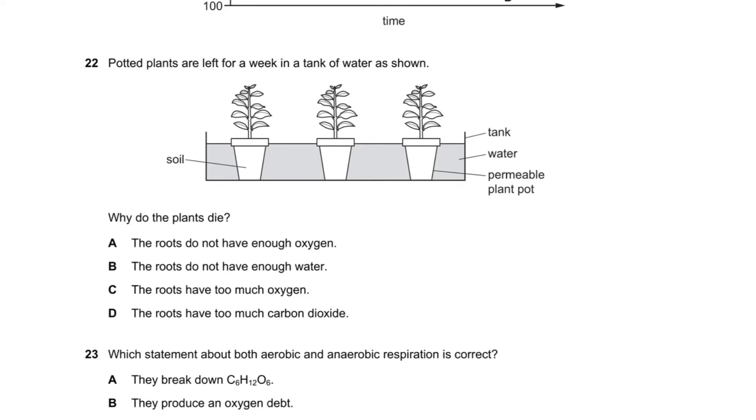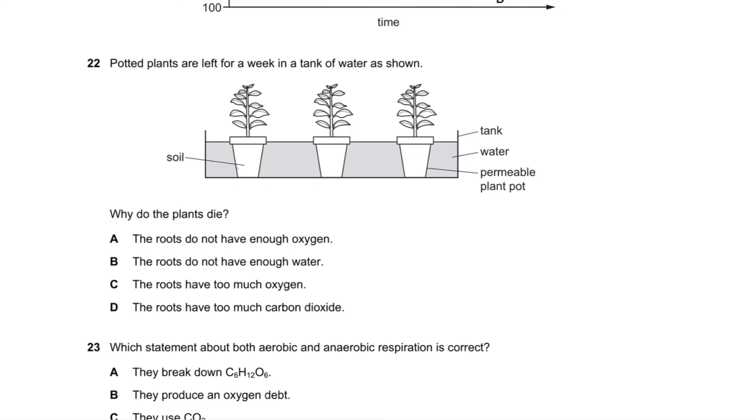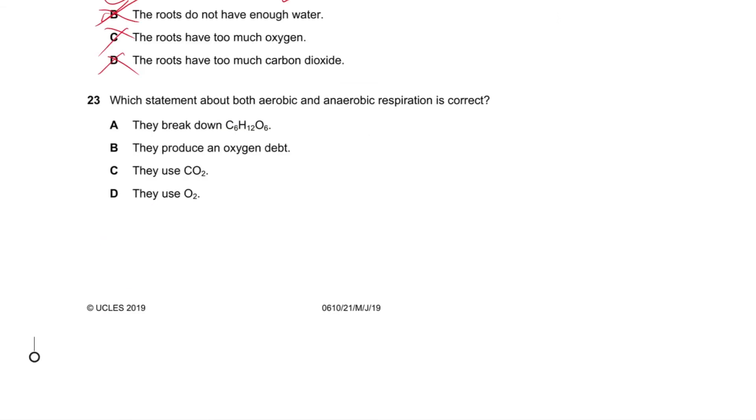Question number 22 says part of plants are left for a week in a tank of water as shown. Why do the plants die? The roots do not have enough oxygen. That's true because the water is surrounding the soil so there's no way for oxygen to really get in there. All of the plant cells need to respire, which requires oxygen. Do they not have enough water? It's permeable, so they do have enough water, so it's not B. They have too much oxygen? There is no such thing as too much oxygen. Too much carbon dioxide and all? So it's A.